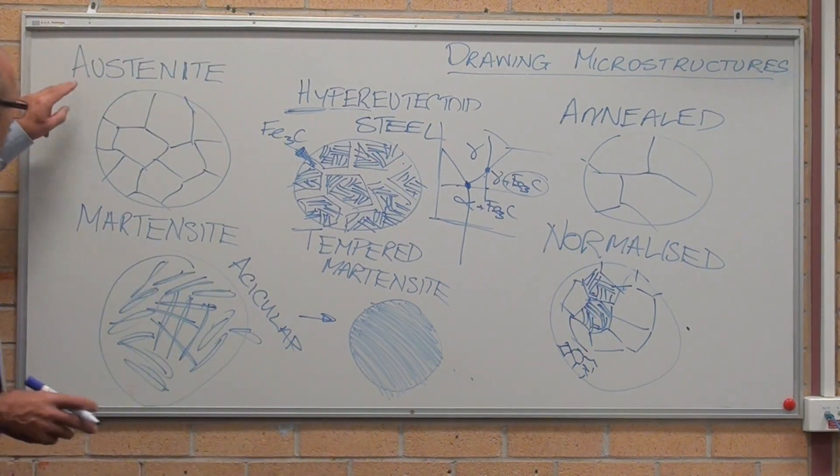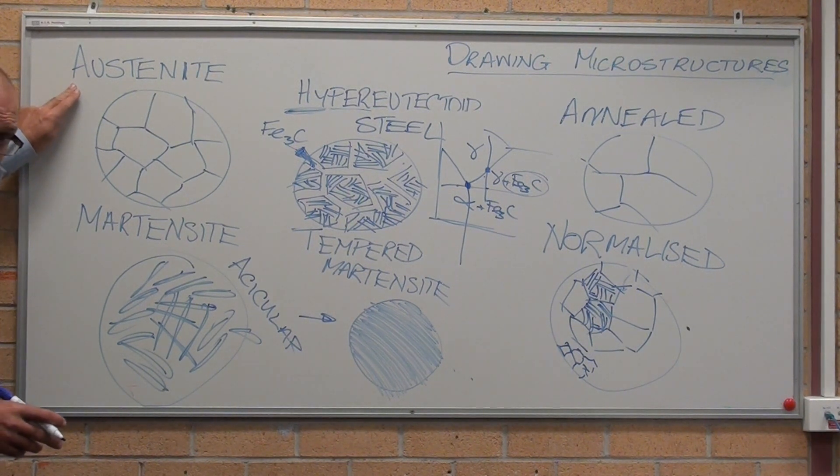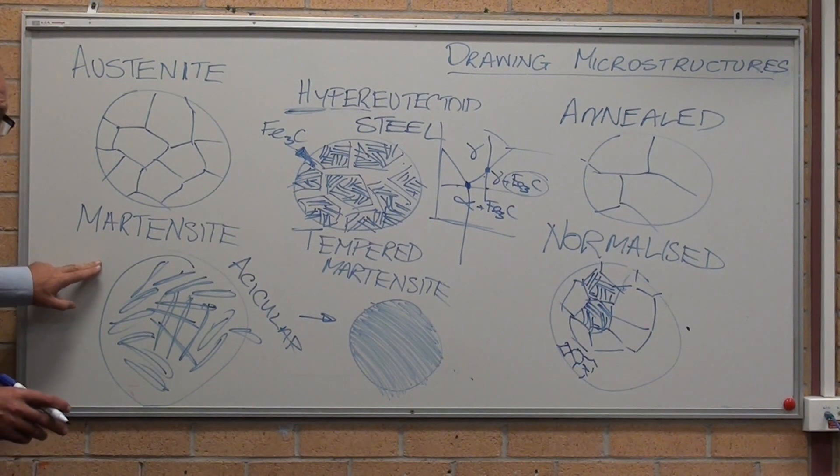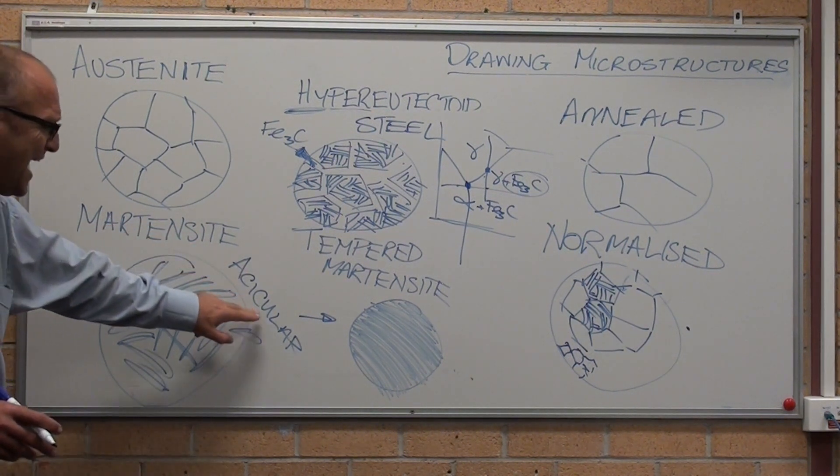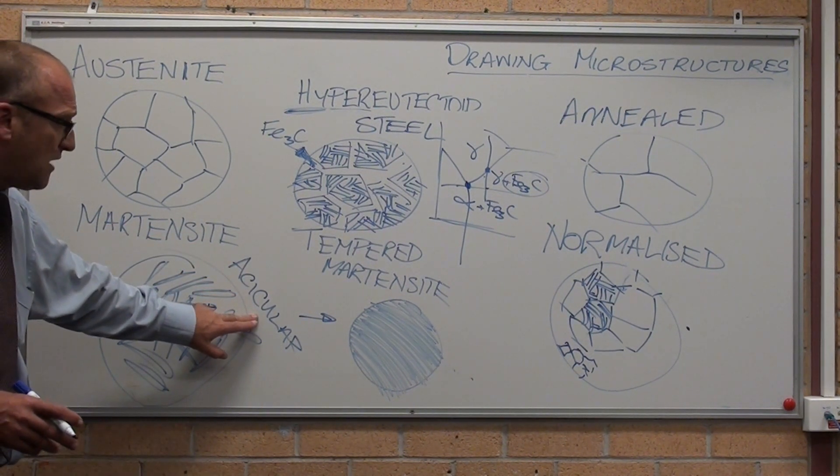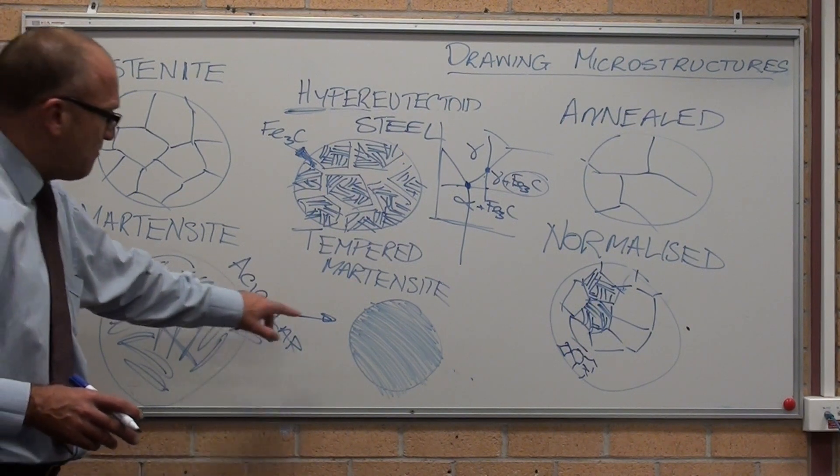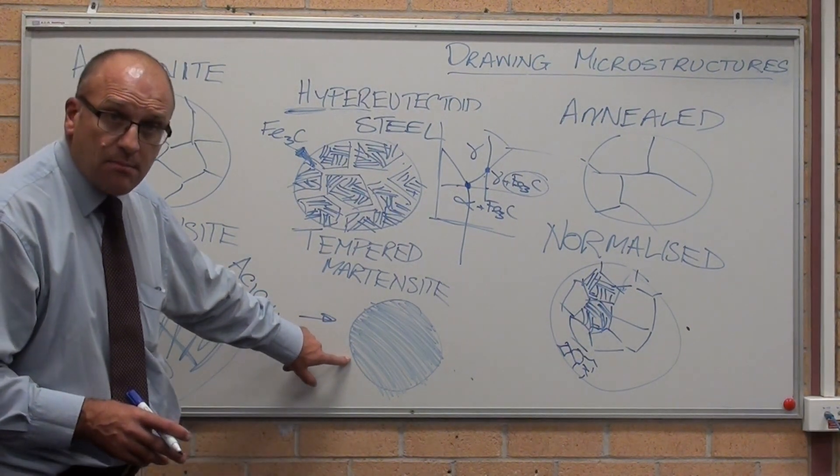If you quench austenite and it's got sufficient carbon so it can't transform, you get martensite, which is an acicular structure. When you temper it, you get tempered martensite.